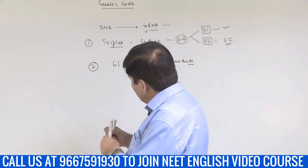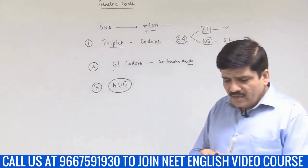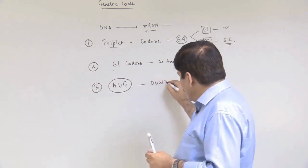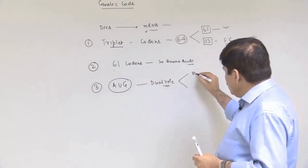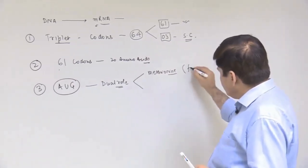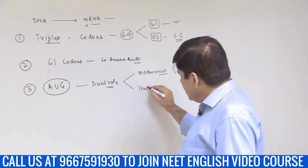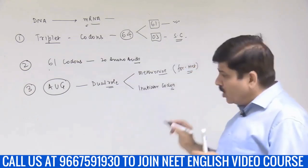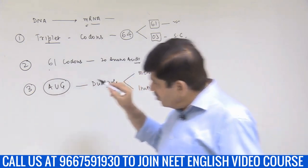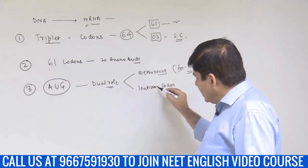Point number three: the AUG codon plays a dual role. Number one, it codes for methionine — formylated methionine in prokaryotes and methionine in eukaryotes. And it is also the initiator codon. The AUG codon present on the messenger RNA molecule has a dual role: one, it codes for methionine, and two, it acts as the initiator codon.